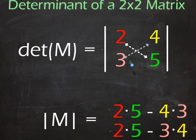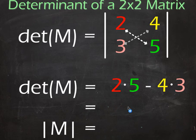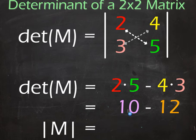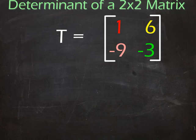So two 5s are obviously 10, four 3s or three 4s are 12. You've got 10 take away 12 which gives us -2. So the determinant of that matrix M is -2, and that is it.